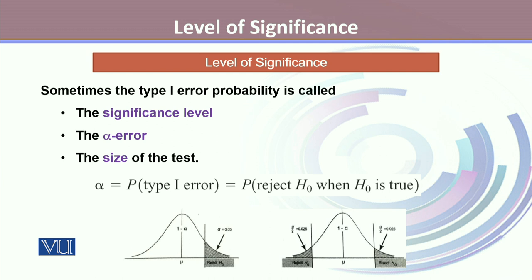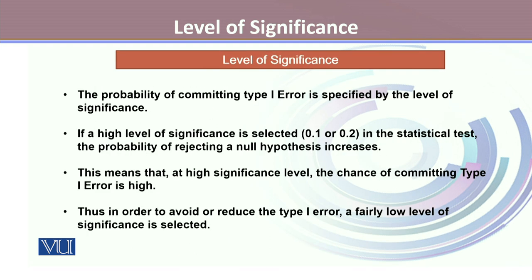Where 1 minus alpha is considered to be the level of confidence. The probability of committing type 1 error is specified by the level of significance. If a high level of significance is selected — let's say 10% or 20% — in the statistical test, the probability of rejecting a null hypothesis increases. This means that at a high significance level, the chance of committing type 1 error is high.